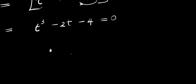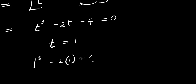Let's find a number that will give us 0 when inserted into this equation. For t equals 1: 1 cubed minus 2 times 1 minus 4 gives us 1 minus 2 minus 4, which is minus 5. So t equals 1 is not giving us 0.